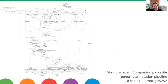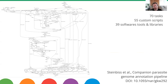To visualize this, here is a pipeline created to annotate a parasite genome. This pipeline has 70 different tasks, including 55 custom scripts and 39 software tools and libraries. Every circle represents one of those different tasks, and all the lines show that data is being passed between these processes in quite a dynamic way.